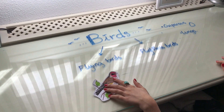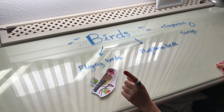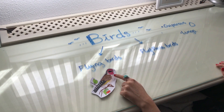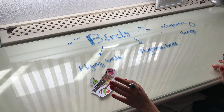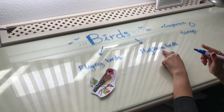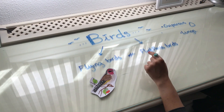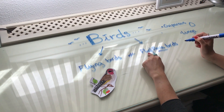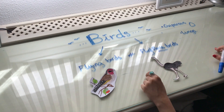Most birds are in the flying birds group because most birds can fly. Their chest muscles are stronger and they are attached to two very large sternums, so they can move their wings to fly. Flightless birds are the opposite — they cannot fly. For example, ostriches are flightless birds.